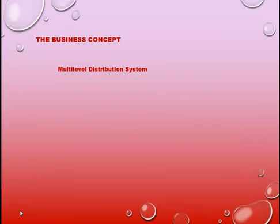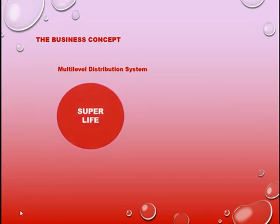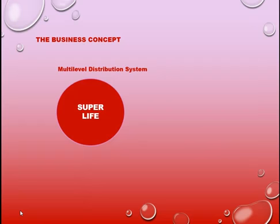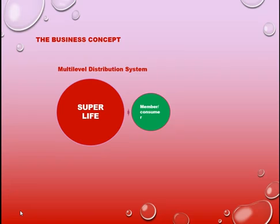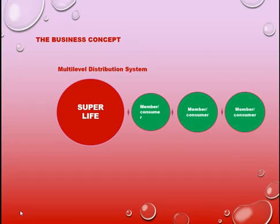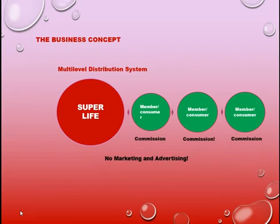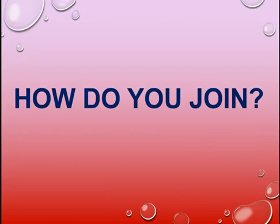I want to introduce a modern concept — the multi-level distribution system — which Super Life has adopted. In this model, the end user who is the consumer becomes a member of Super Life and markets the product to other members, who also join and become consumers. The commissions go to the members, and the company does not invest in marketing or advertising. To be part of this company you have to be both a member and a consumer of our products.